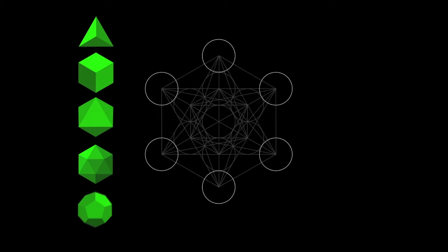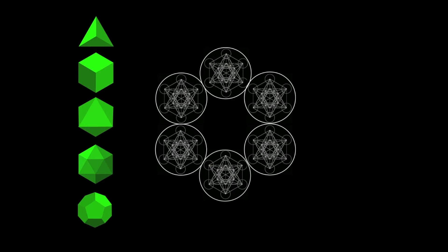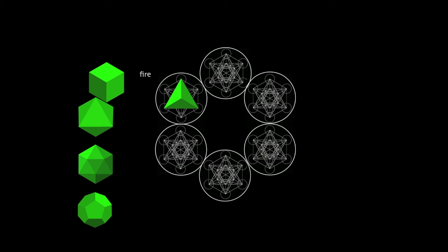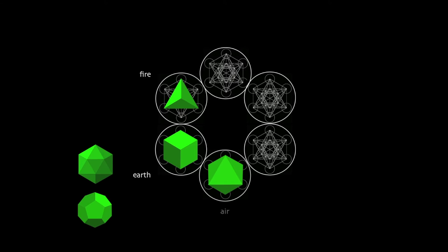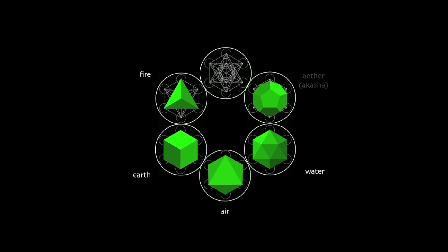Together we'll understand how these forms became associated with the four alchemical elements of fire, earth, air, and water, and ether and akasha — the quantum physics of which we're still trying to understand — and how crystals and stones cut in these forms became representative of the chakras.